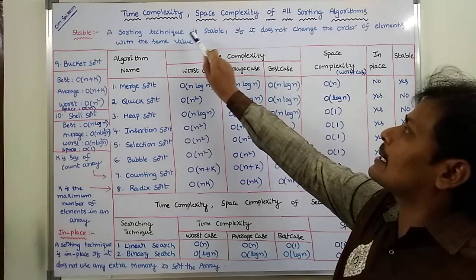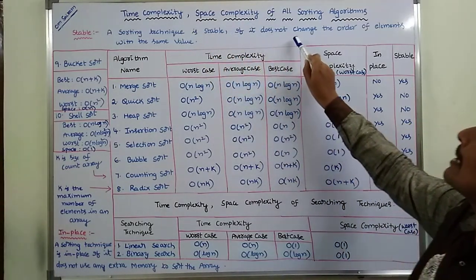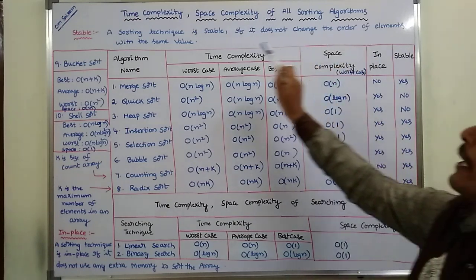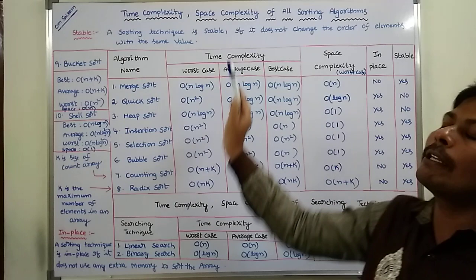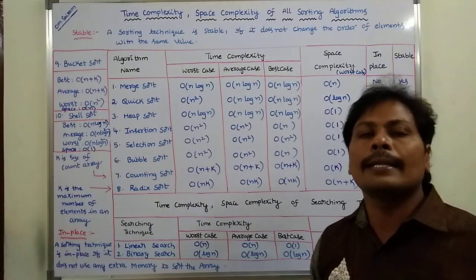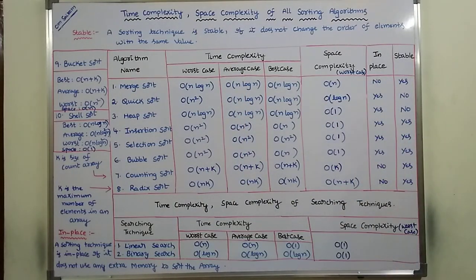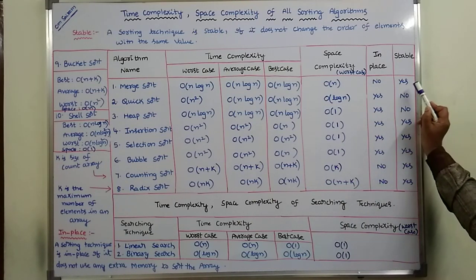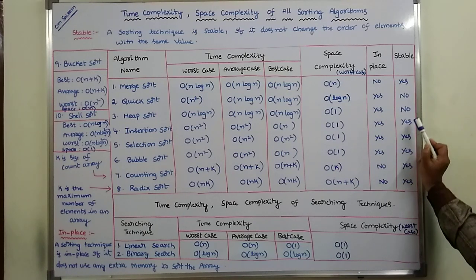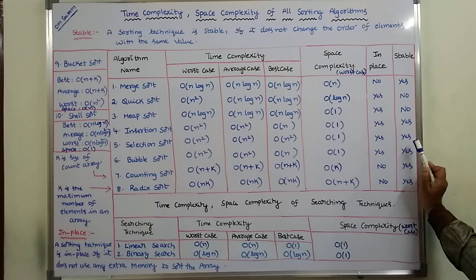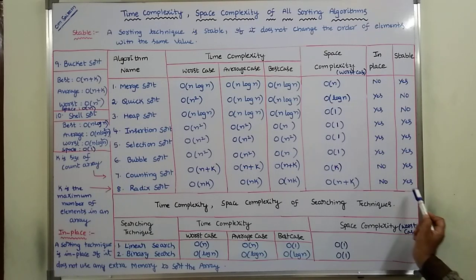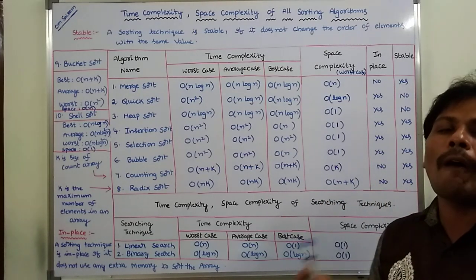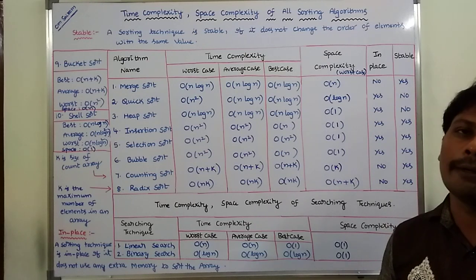Stable Algorithm: A Sorting Technique is Stable if it does not change the Order of Elements with the Same Value — then that Sorting Algorithm is called a Stable Algorithm. Among the 10 Sorting Algorithms, Merge Sort is a Stable Algorithm, and also Insertion Sort, Selection Sort, Bubble Sort, Counting Sort, and Radix Sort — these Algorithms are called Stable Algorithms.